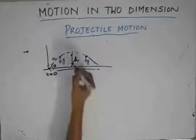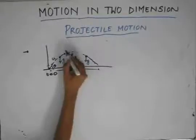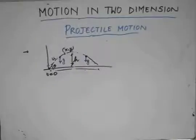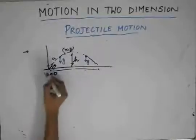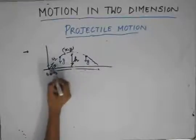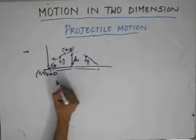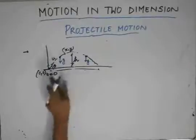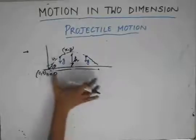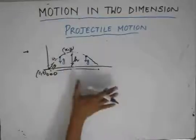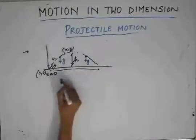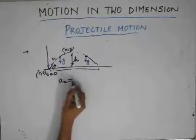Let the particle at any instant of time be at this position. Let us assume that the position at which the particle starts is the origin. The x-coordinate at any instant of time — since we know that the horizontal motion and the vertical motion can be treated separately — let us write the acceleration in the x-direction, which equals 0.